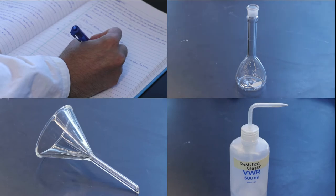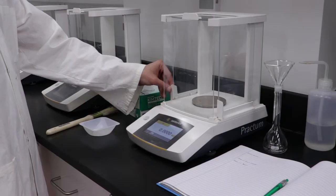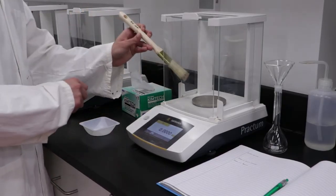Head to the analytical balance bringing a notebook, pen, volumetric flask, wash bottle, funnel and the weighing boat containing the solid you weighed out. Place this equipment on the bench next to the balance.